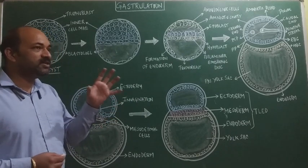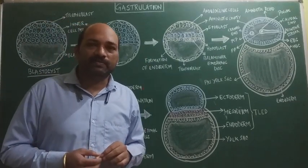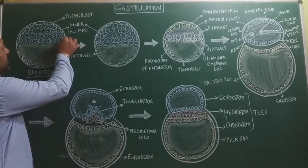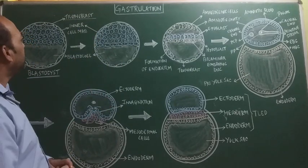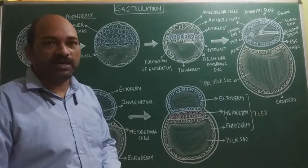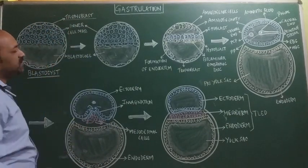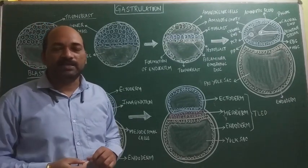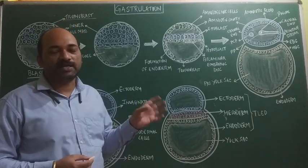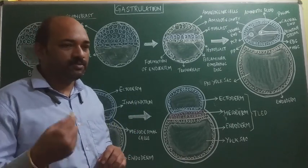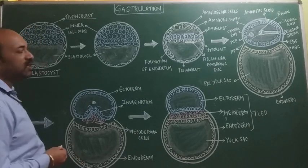Implantation, as we have discussed in earlier videos, refers to the attachment of the blastocyst to the endometrium. The outer layer of cells of the blastocyst, called trophoblast, get distinguished into two types: syncytiotrophoblast and cytotrophoblast. The syncytiotrophoblast cells are responsible for the secretion of a hormone called HCG — human chorionic gonadotropin — which acts as an immunosuppressive agent preventing rejection of the blastocyst embedded into the maternal uterus or endometrium.